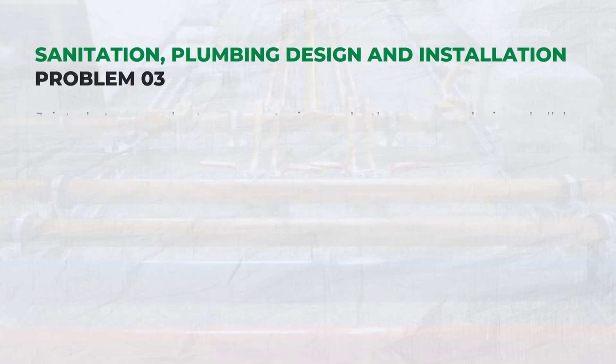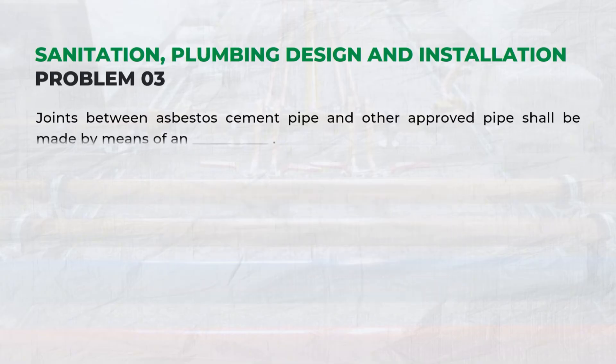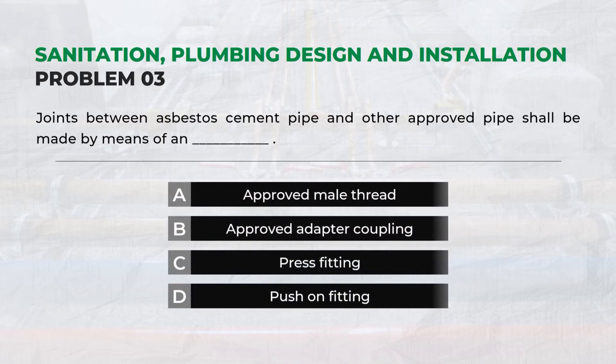Joints between asbestos cement pipe and other approved pipe shall be made by means of — Answer: B. Approved adapter coupling.